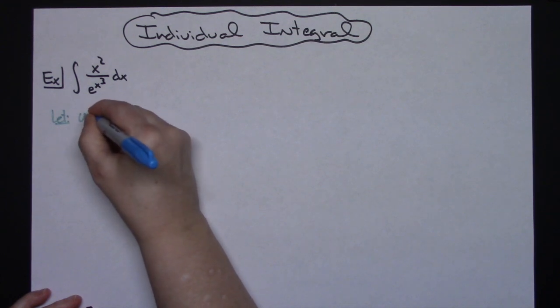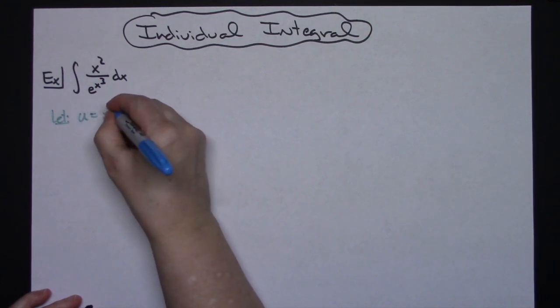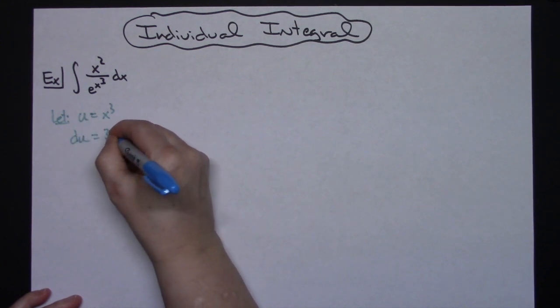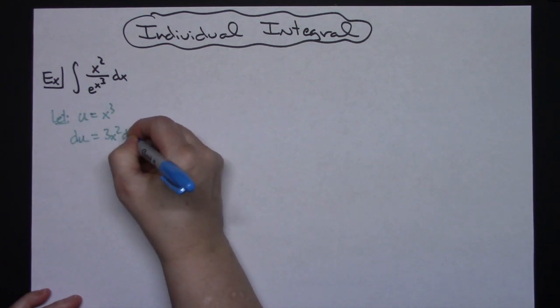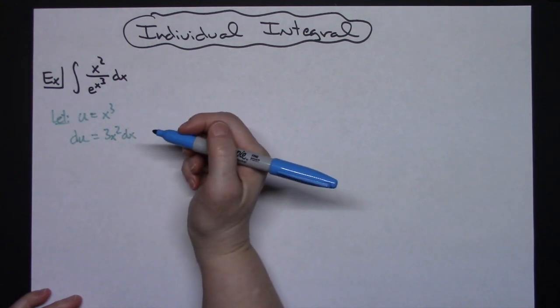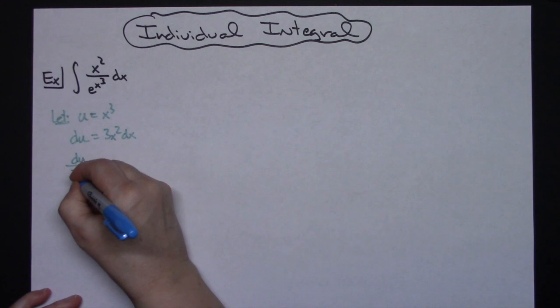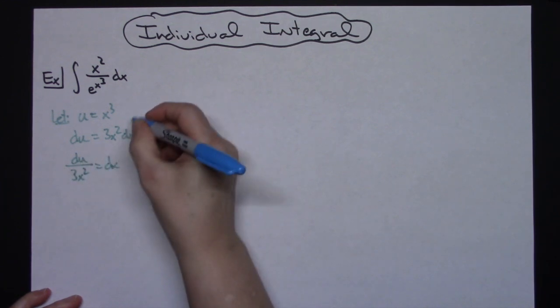So we're going to let u equal x to the third. When I take the derivative of each side I'll have du is equal to 3x squared dx, and then going ahead and solving all the way down for that dx, I'll have du over 3x squared is equal to that dx.